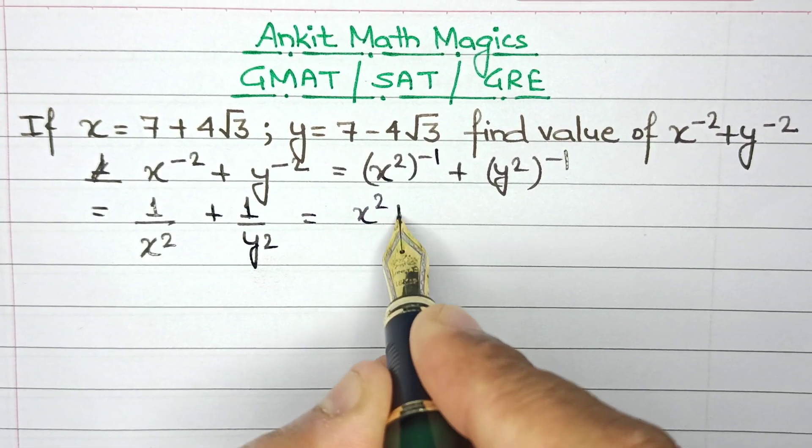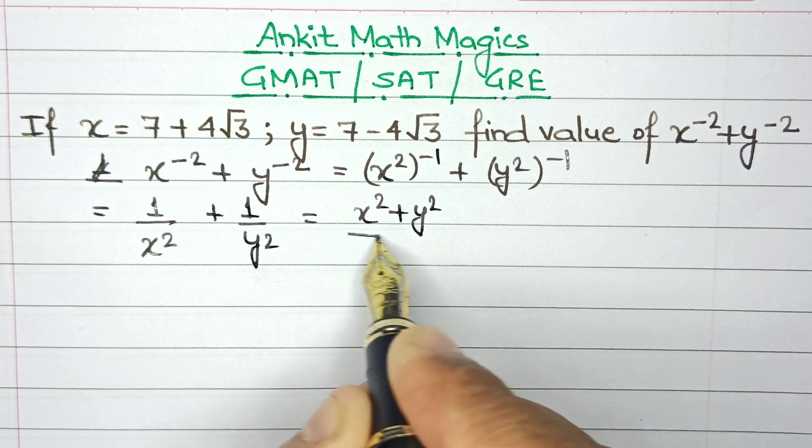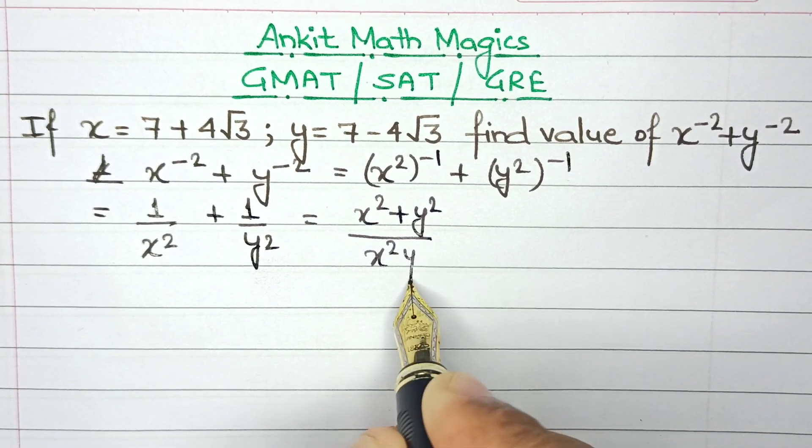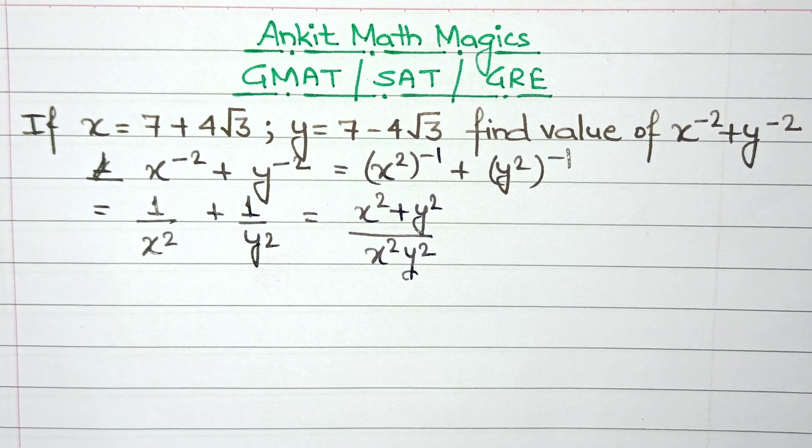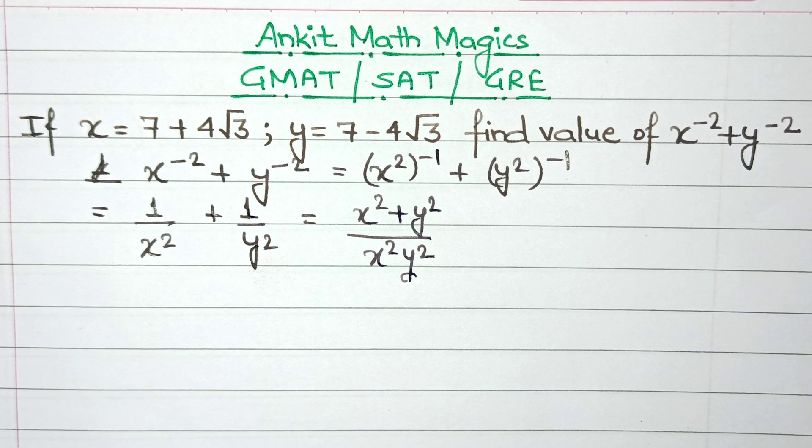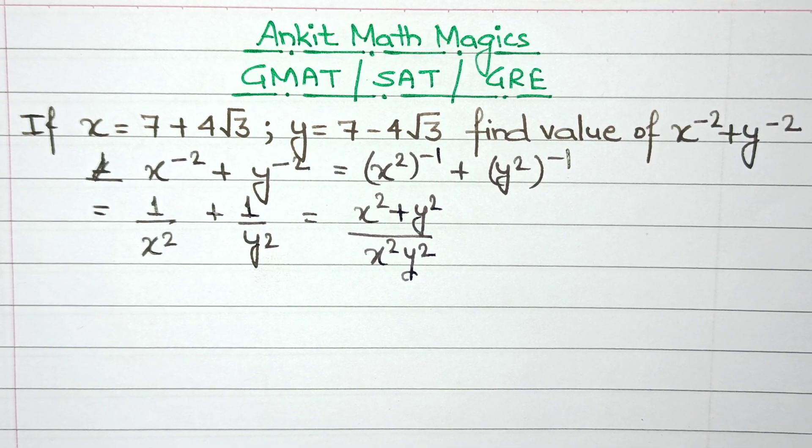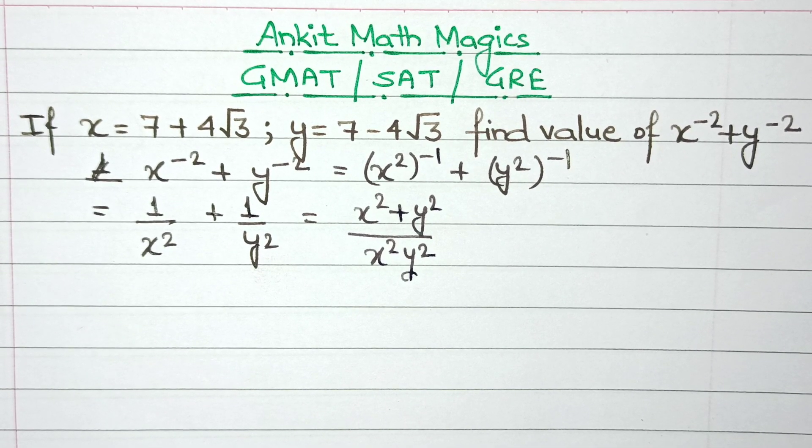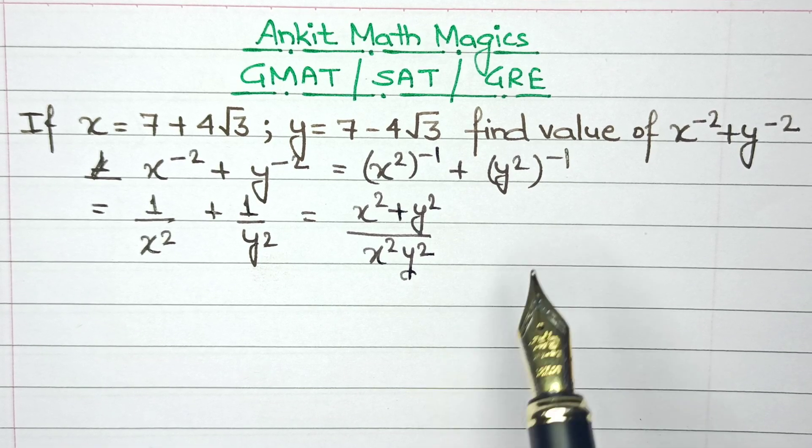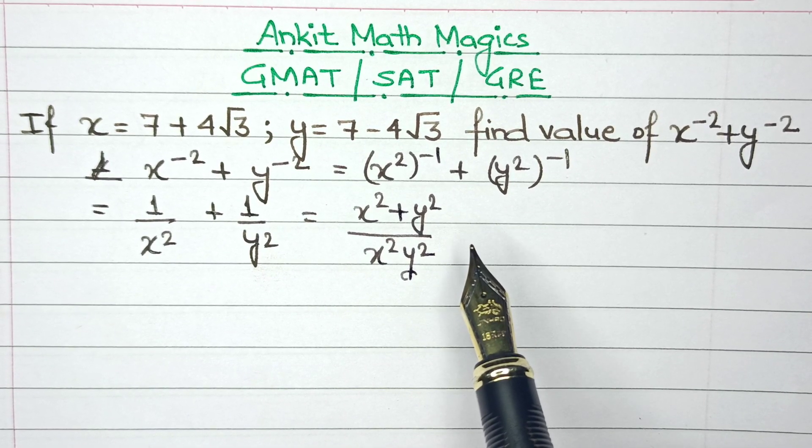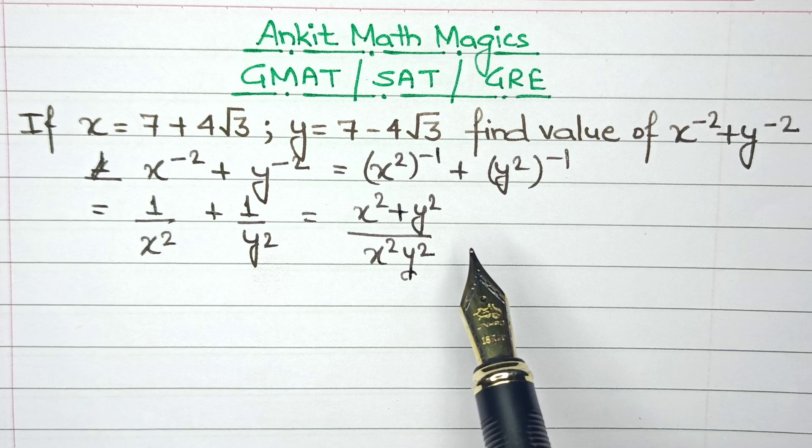Let's take the LCM, so this would be x square plus y square divided by x square y square. As you can see, till now I have not substituted the value. I will only substitute the values of x and y when I am convinced that the solution will not create any confusion.